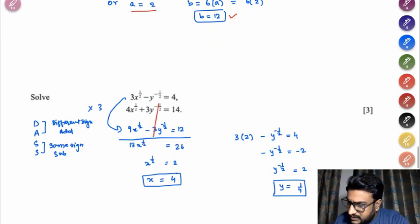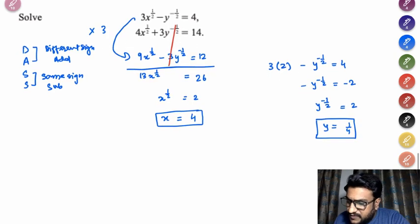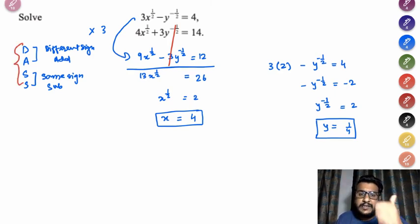Now solve the equation, this is based on exponents and solving equations. So over here we are supposed to solve the two equations simultaneously. Now if I observe carefully I can easily make the coefficient of y same, so I multiplied the first equation by 3 and wrote it down. Now if you remember this DASD, different sign we need to add and same sign we need to subtract. So over here my variables have different sign but same value so I need to add them.